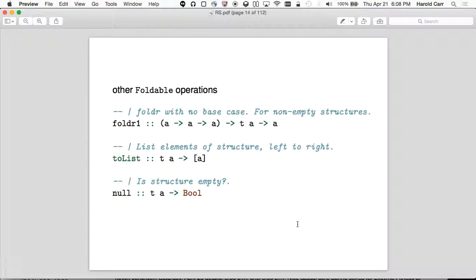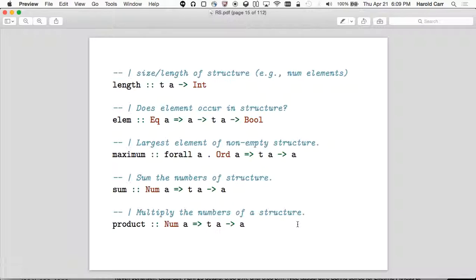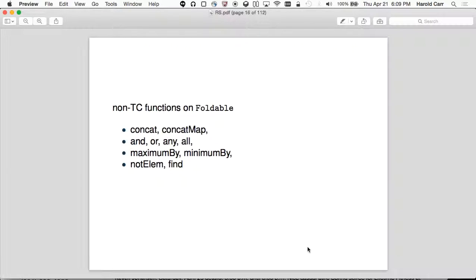And other foldable operations. Fold R1, that was the one I meant a moment ago, the one where you don't have a base case. If you have a non-empty structure, you don't need a base case. So it just says, you know, do the fold operation. And you can change something to list by just saying to list. You can ask if it's empty by saying null. And a whole bunch of other ones. Length, element, maximum, sum, and product. So I encourage you, if you have data types, to derive foldable. Because you don't want to be writing these yourself. You get them for free. And there's other stuff. Other non-type class functions. But they still work on things that are, they're not inside the type class. But they still require something to be foldable.